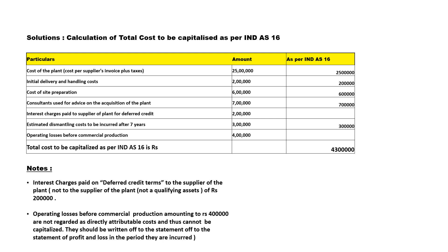The first particular is cost of plant per supplier invoice plus taxes — yes, this is related, so we include 25 lakhs in our solution. Next, initial delivery and handling cost — yes, this is related, so we include 2 lakhs. Cost of site preparation — yes, this is also related, so we add 6 lakhs.